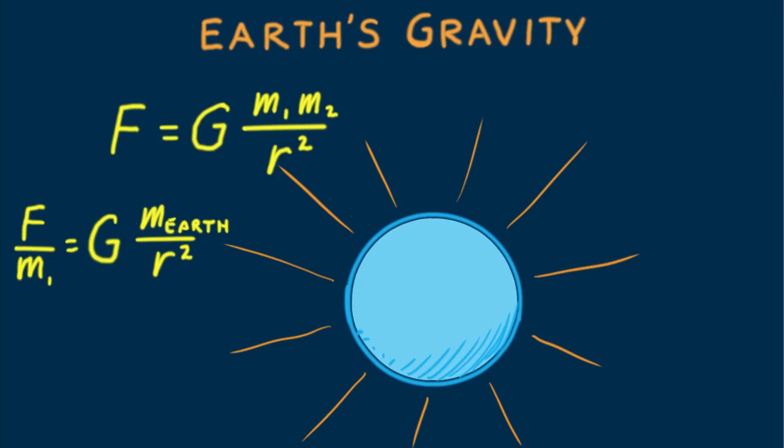Now here's the interesting part. Recall from previous lessons that F over M is Newton's second law for acceleration, and that the acceleration due to gravity at Earth's surface is 10 meters per second squared. If we plug Earth's mass and its radius and the gravitational constant G into this equation, we get 10 newtons per kilogram, or more precisely 9.8 newtons per kilogram. Recall that newtons per kilogram is equivalent to meters per second squared. Confirmation of what we've previously learned.